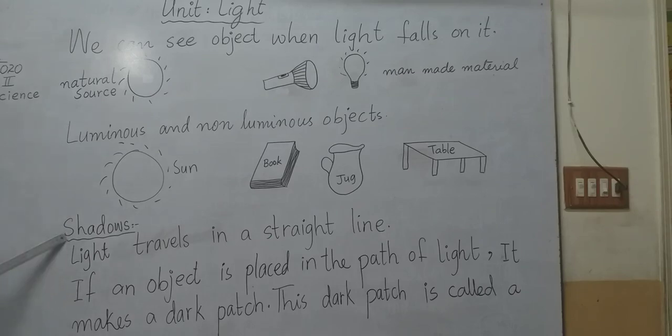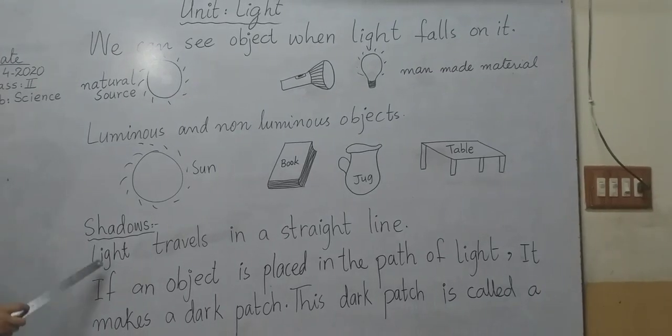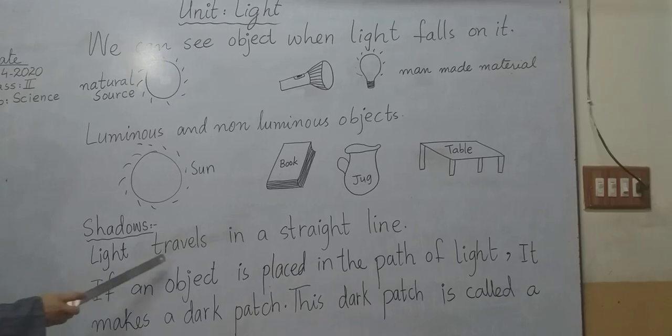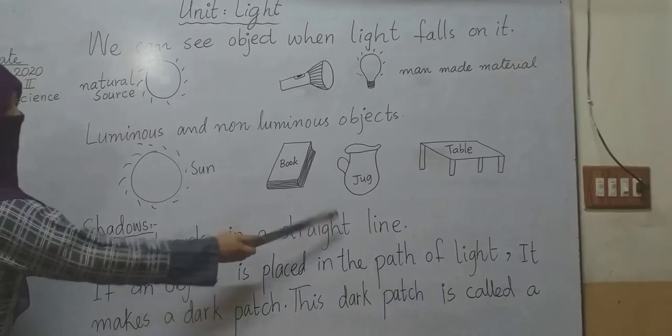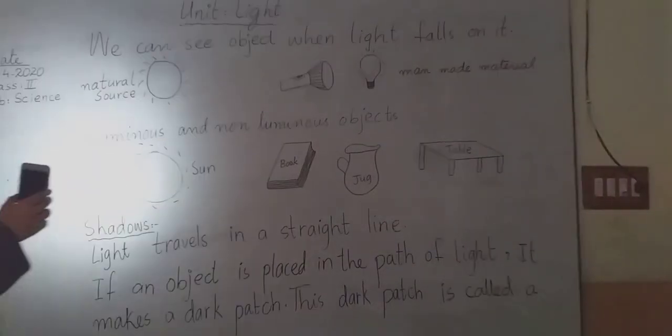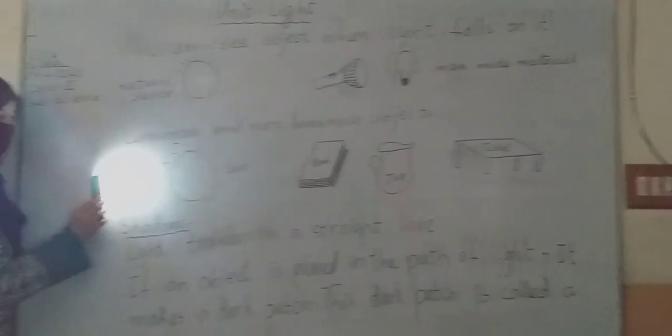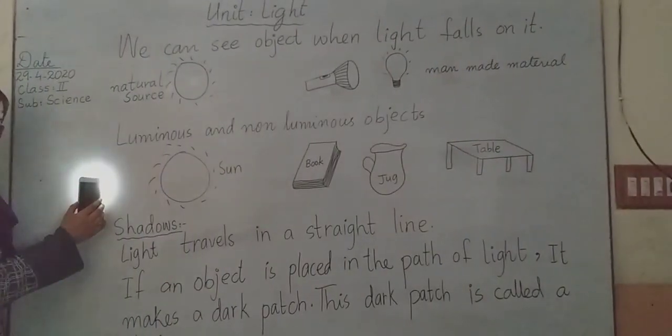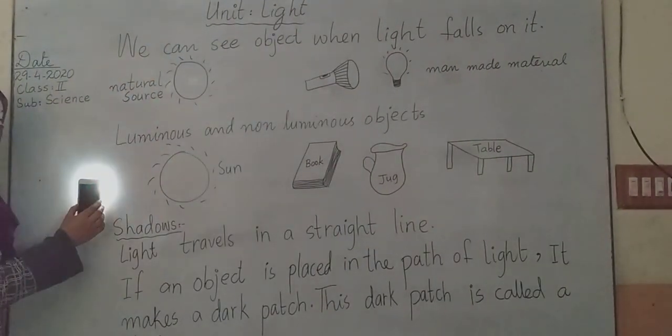Now, shadow. Next topic is shadow. Light travels in a straight line. I have a mobile and I have a torch in this. You can see my mobile light falls on the board in a straight way, in a straight line.